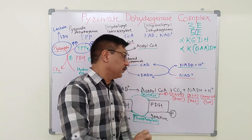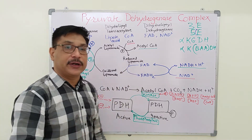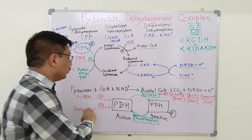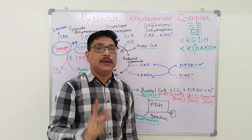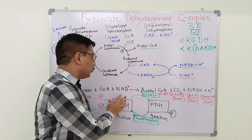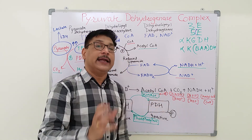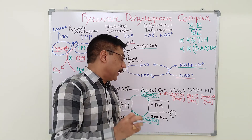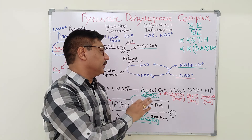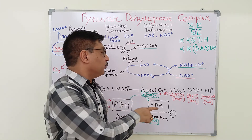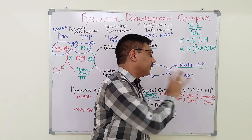There are two mechanisms of regulation. One is direct inhibition: NADH and acetyl-CoA directly inhibit the pyruvate dehydrogenase complex. The second mechanism is covalent modification of pyruvate dehydrogenase complex, leading to formation of an inactive phosphorylated pyruvate dehydrogenase enzyme. This is brought about by high concentrations of NADH, ATP, and acetyl-CoA.